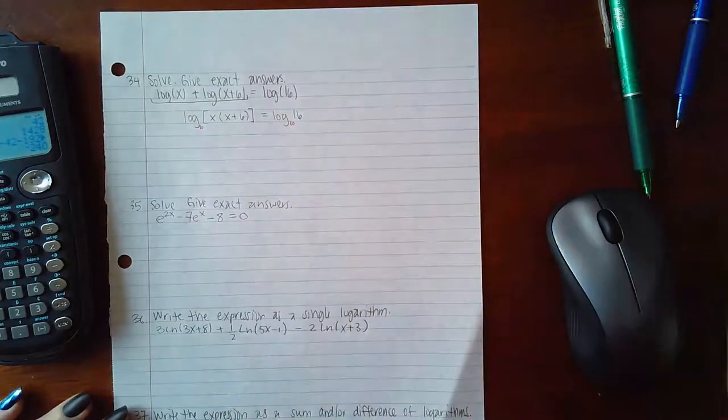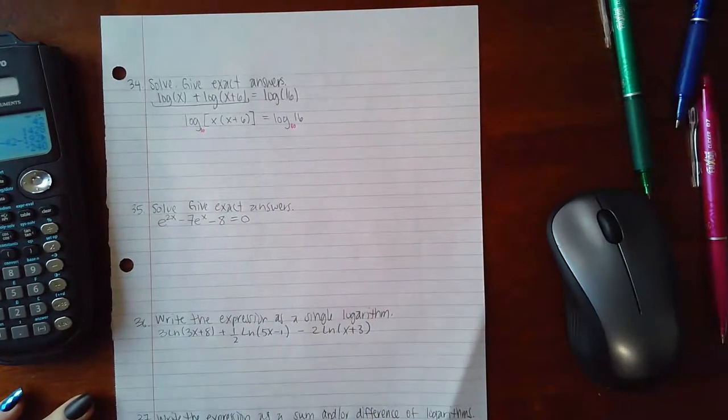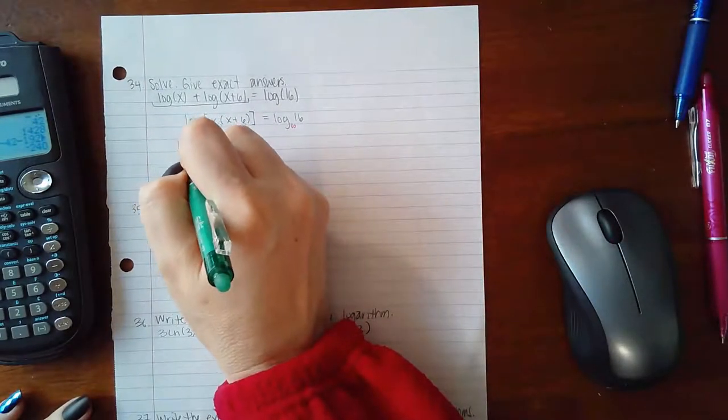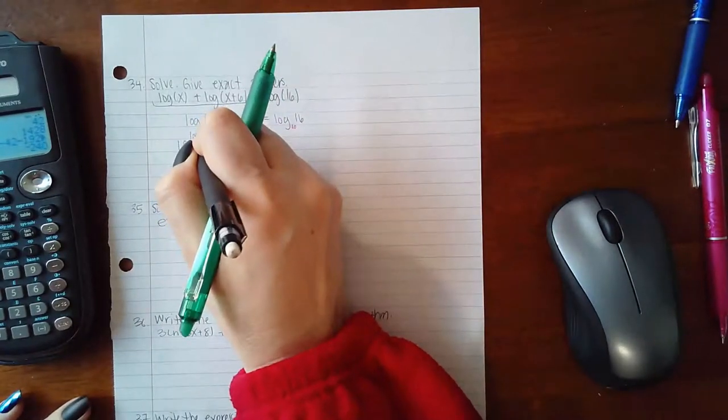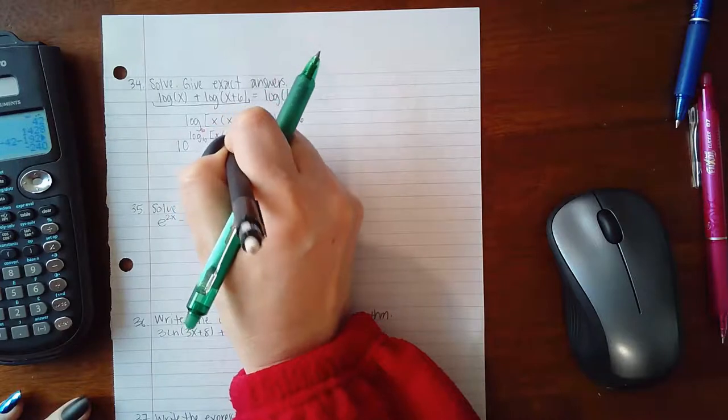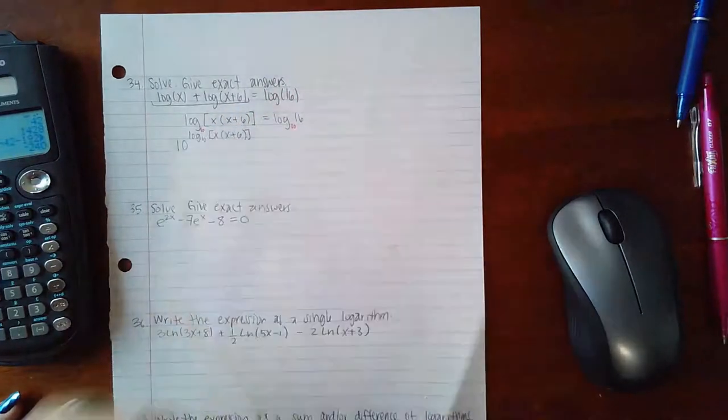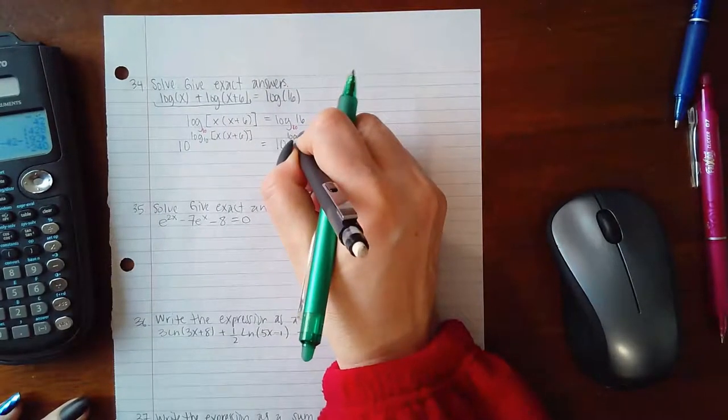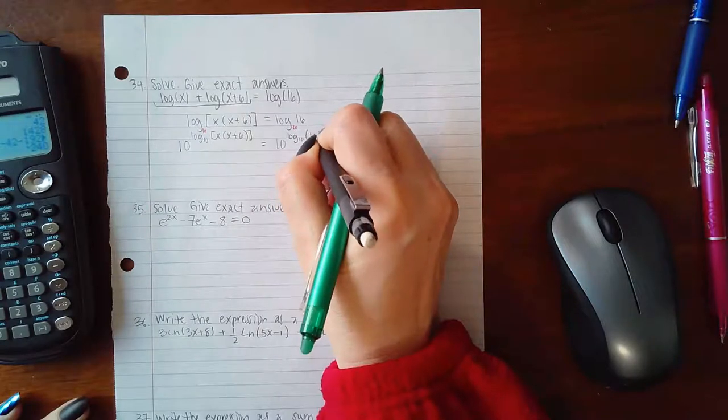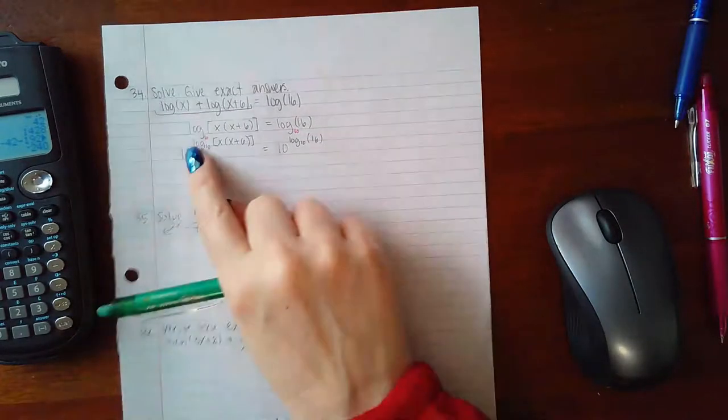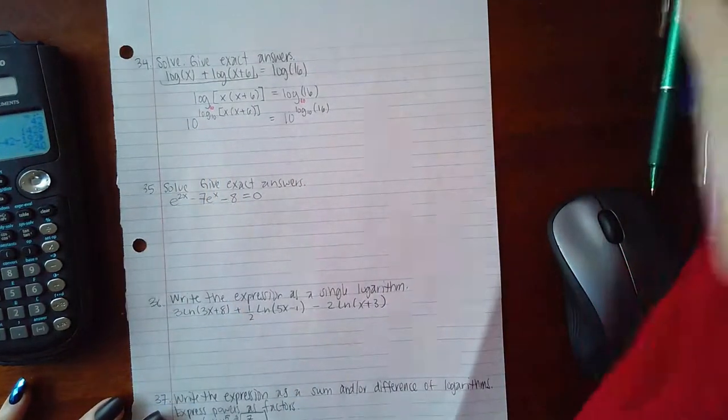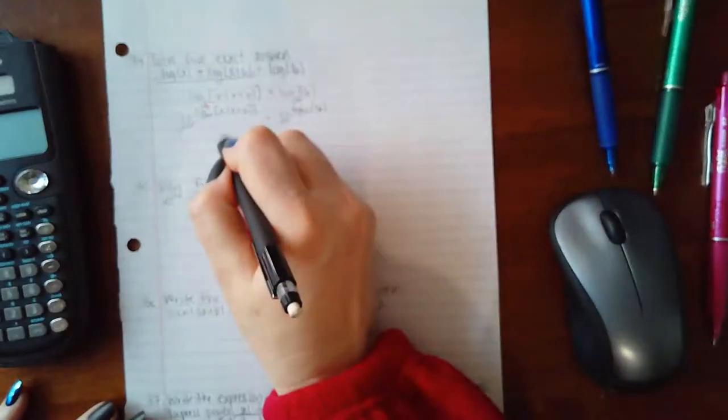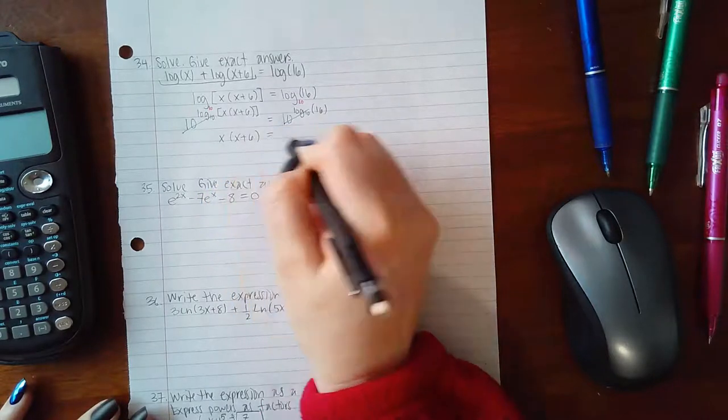If I have a base 10 log, in order to use the inverse operation, I would have to do a base 10 exponential. So it's going to be 10 raised to log base 10 of x times (x plus 6) and 10 raised to log base 10 of 16. The exponential base 10 and logarithmic base 10 cancel each other out, so all I'm left with is x times (x plus 6) equals 16.